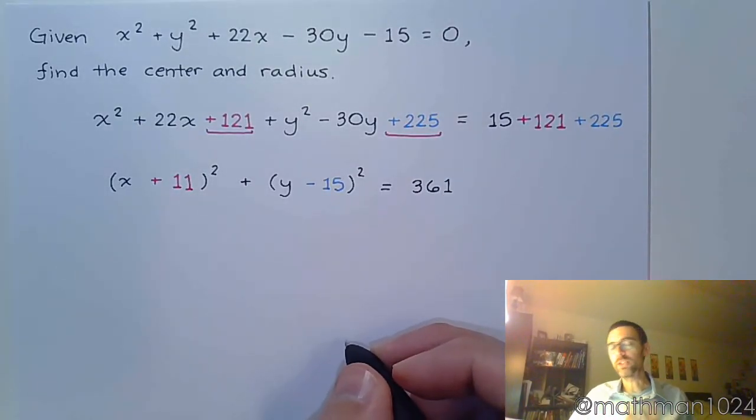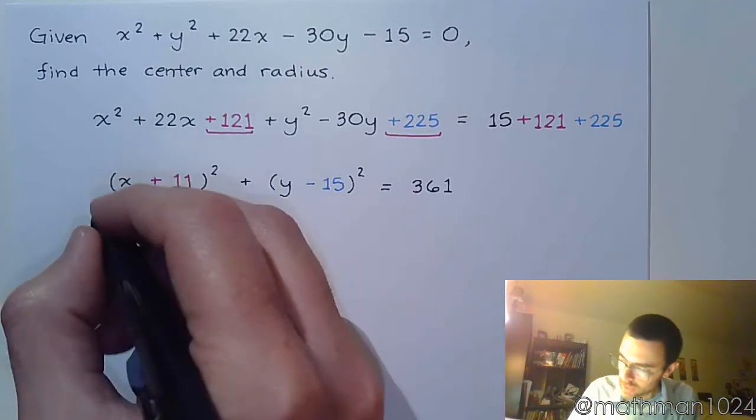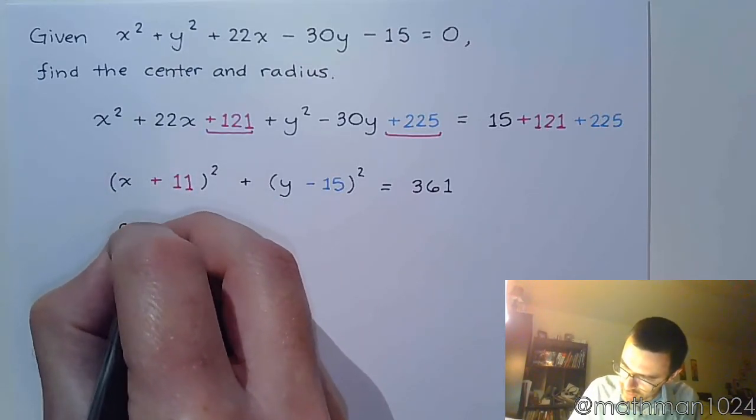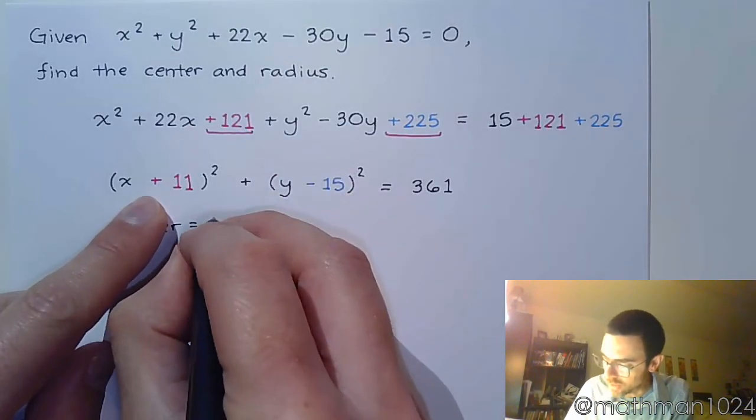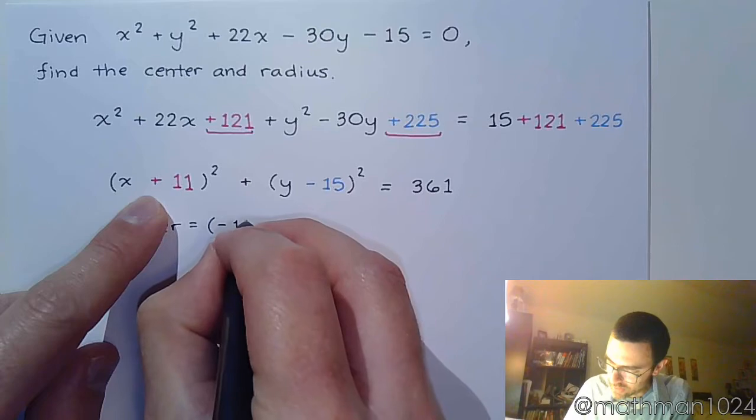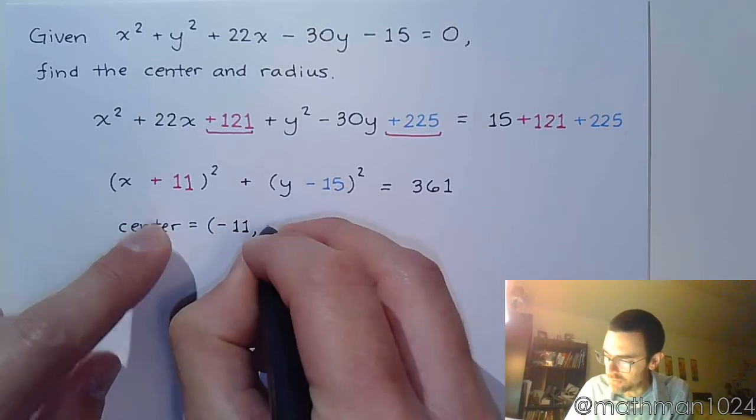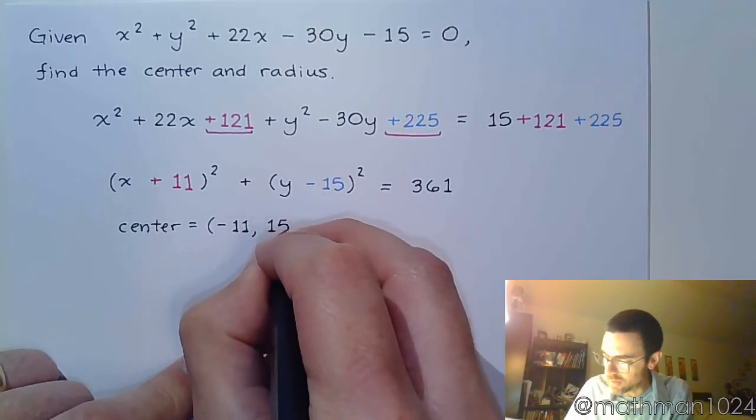Alright, so things are set up perfectly to be in that center radius form. My center is going to be the opposite of this, like we've been seeing. So it's going to be negative 11. And the opposite of negative 15 is going to be positive 15.